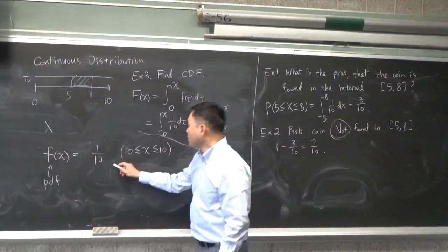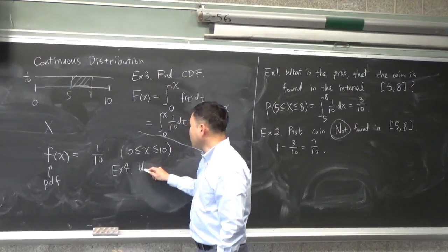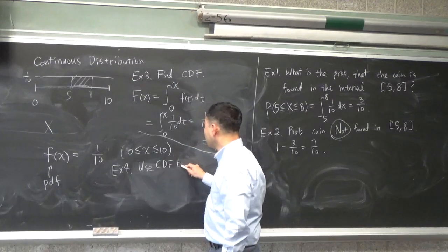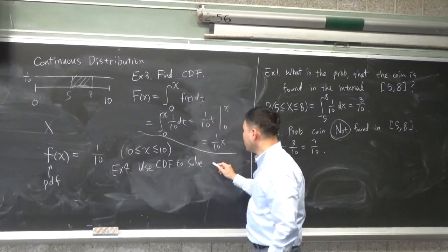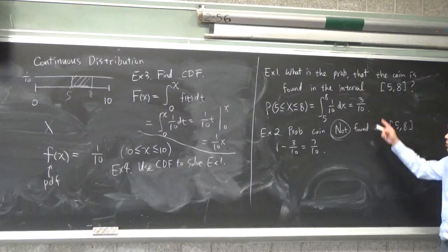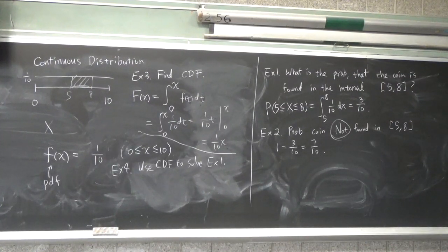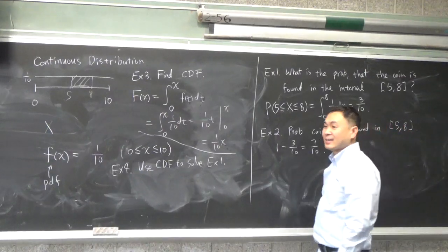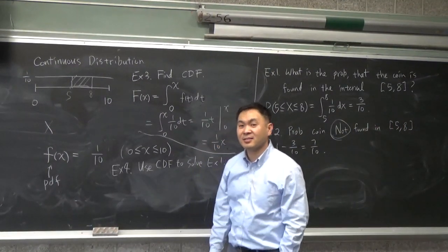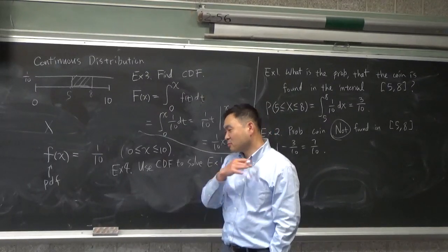And then, we might ask something like, use CDF to solve example 1. So, we're going to do the first question just by using CDF. How would you do it? Would it be the probability of 0 through 8 minus the probability of 0 through 5? Perfect.